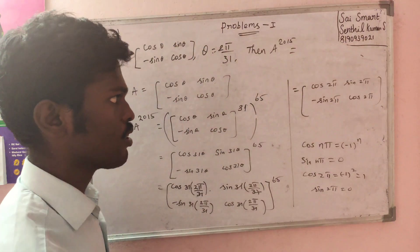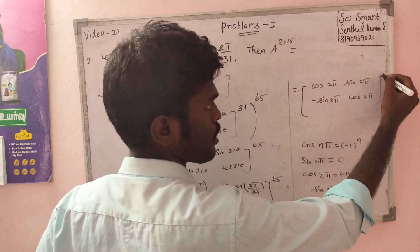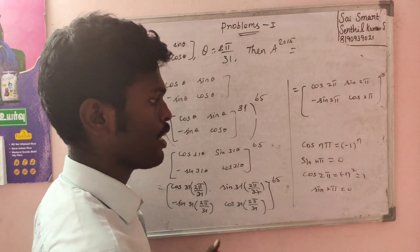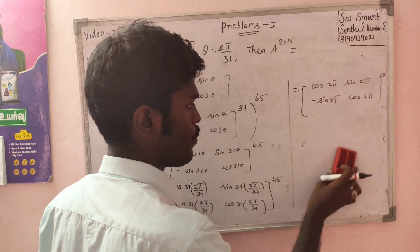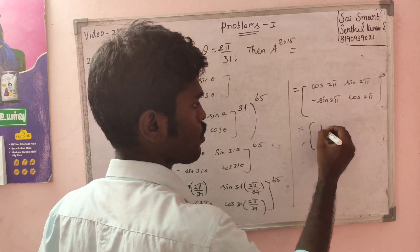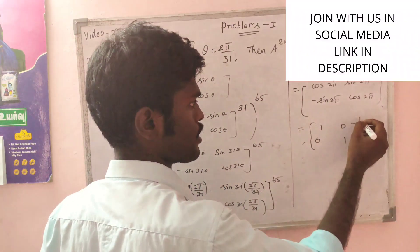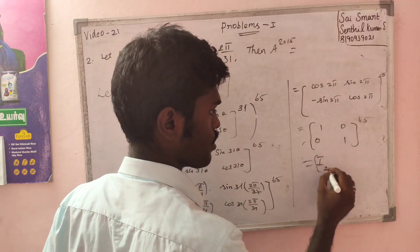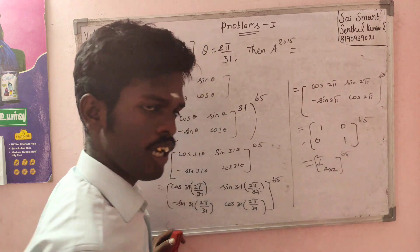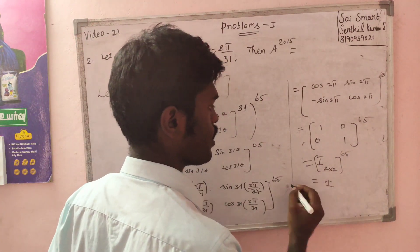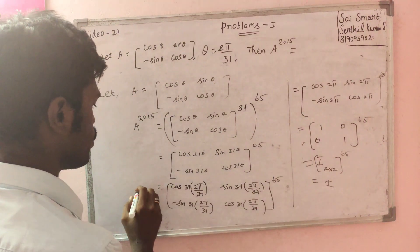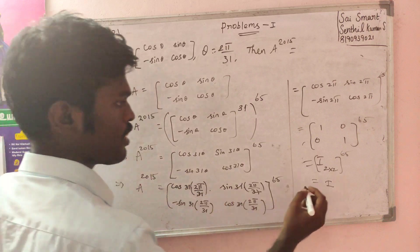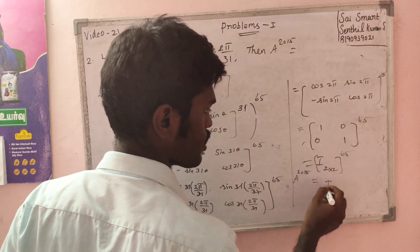So the value of cos 2π, sin 2π: sin nπ is equal to 0. So cos 2π = 1, sin 2π = 0. So this is nothing but the 2×2 identity matrix I. I raised to the power of anything — I^(anything) = I. So A^2015 = I^65 = I.